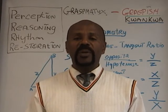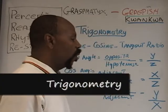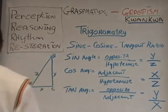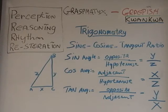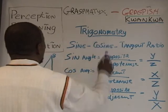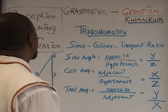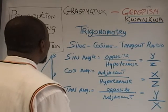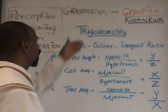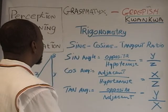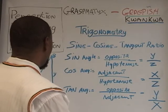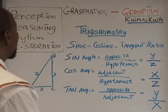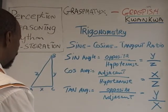Today we're going to be addressing trigonometry. The question is: what is the meaning of the word trigonometry? Well, trigonometry, according to the Greeks, is a Greek word and it means the measurement of angles.